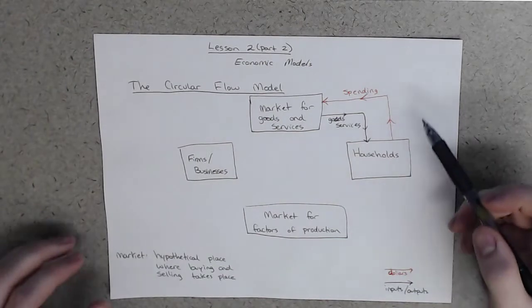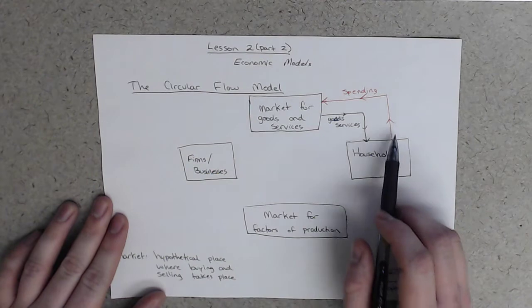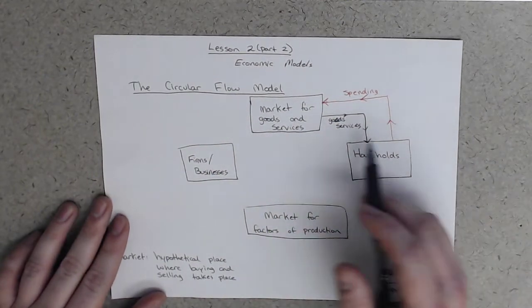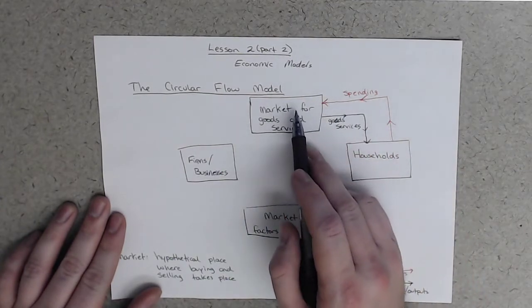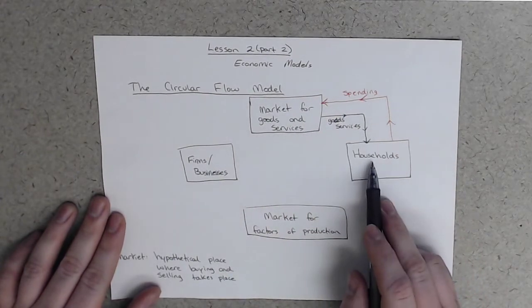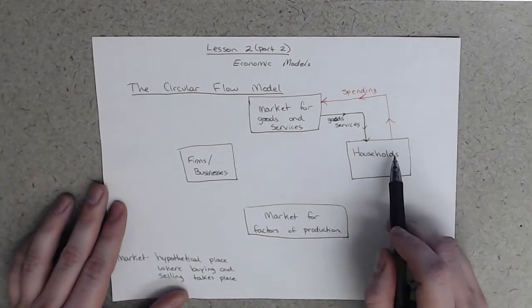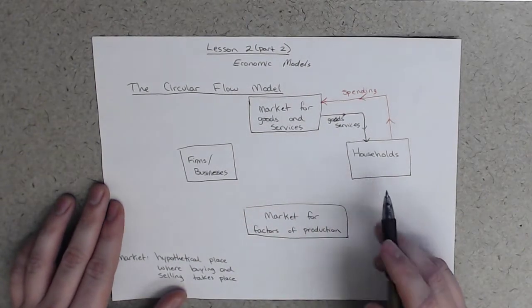So this seems fairly simple. Households go to, say, the grocery store, and they spend money there and they come home with groceries. Or anything else. Maybe you go to the mall and you buy an iPhone and you come home with an iPhone. So that's all this part right here is saying, is that you go to the store, you spend money, and you get things in return.